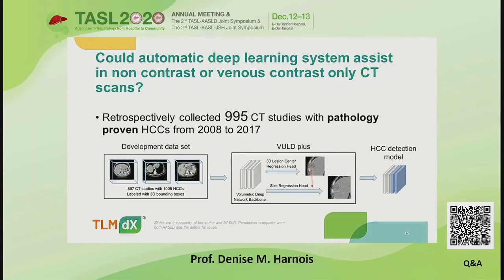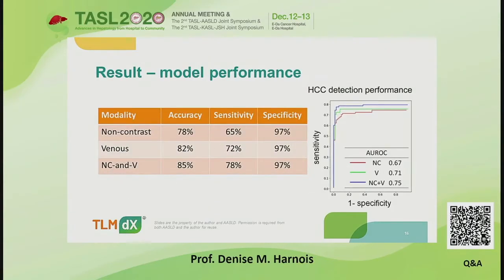Their control were 61 imaging study CT scans obtained from trauma victims without evidence of liver injury. What they were able to demonstrate through model performance was a specificity of 97% for non-contrast venous and non-contrast plus venous phase CT scans. Sensitivity went from 65 to 78%, with accuracy of 78% in the non-contrast studies, 82% in the venous phase studies, and when both were combined — non-contrast and venous phase — 85% accuracy.